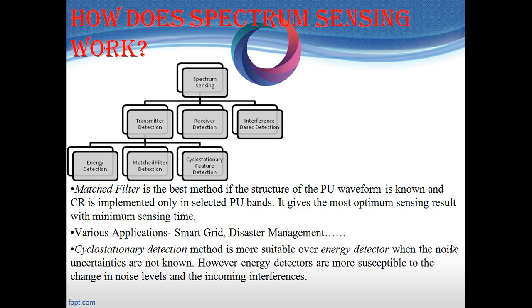The secondary user analysis is based on power and band of interest regardless of whether the primary user waveform is known or not. The secondary user selects the energy detector or cyclostationary detector if the primary user waveform is not known, and the match filter if the primary user waveform is known. Cyclostationary detection is preferred over the energy detector if the noise uncertainties are known, and energy detectors are preferred if the noise uncertainties are not known.